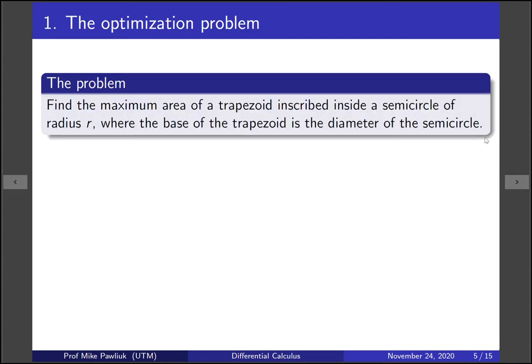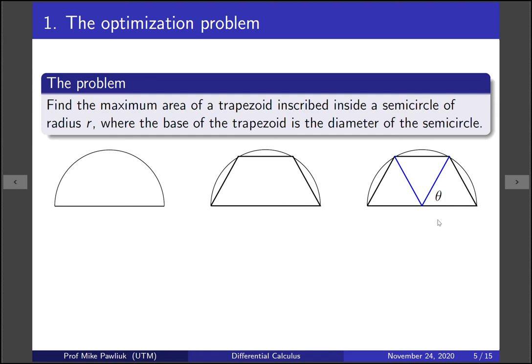So let's start with the problem. Find the maximum area of a trapezoid inscribed inside a semicircle of radius r where the base of the trapezoid is the diameter of the semicircle. This problem looks something like this. We want to find the area of this trapezoid. Now the previous video solved this problem by thinking about the trapezoid as three triangles and thinking about this angle that's made with the center and one of the vertices of the trapezoid.